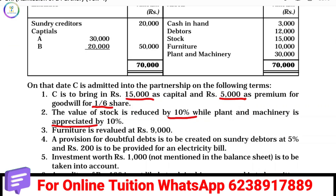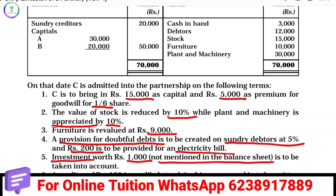Plant and machinery value appreciated by 10%. Furniture has a penney value. A provision of 9,000 dollars is created. Provision for doubtful debt, Sunrise Act has 5% added to create. $200 electricity bill. Investments are not mentioned in the balance sheet, so we can take it. A credit of Rs. 100.